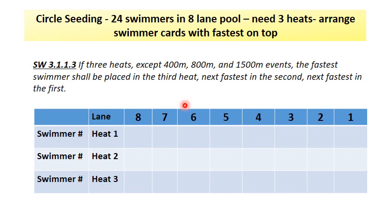In this next seating rule we have 24 swimmers in an eight-lane pool seated slowest to fastest. SW 3.1.1.3: if three heats, the fastest swimmers shall be placed in the third heat, the next fastest in the second heat, the next fastest in the first heat, and so on. You're going to need three heats. Make sure to arrange your swimmer cards with the fastest on the top. Follow the same line seating as previously but this time use three heats.